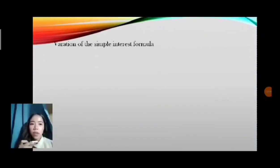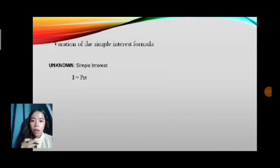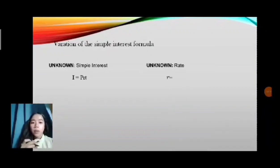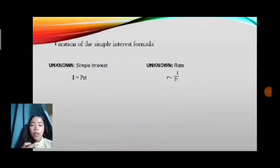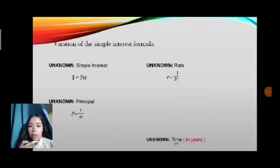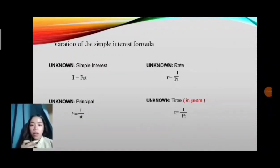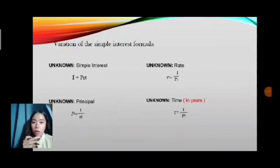Variations of the simple interest formula: when finding simple interest, the formula is I equals PRT. When finding rate, R equals I over (P times T). When finding time, T equals I over (P times R). Always remember that time must always be in years.